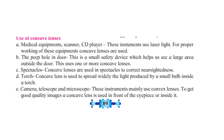A concave lens is used in a torch to spread the light produced by a small bulb widely, since it is a divergent lens. In cameras, telescopes, and microscopes, although convex lenses are primarily used, a concave lens is also used in front of the eyepiece or inside it to obtain good quality images.